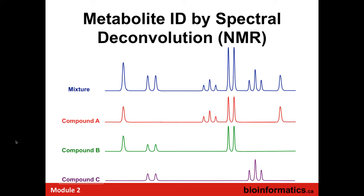If you do the thought experiment and add the purple, green, and red spectra together, you can see they sum up to produce the blue mixture spectrum. There's the red singlet on the far right, the purple triplet, the two doublets from compounds A and B adding up to produce a giant doublet. So we can see how pure spectra of three compounds add up to produce the mixture. What we have to do in deconvolution is the reverse problem — take the mixture and decide which three out of maybe a hundred or three hundred possible compounds constitute it. The forward problem is easy; the reverse is harder.